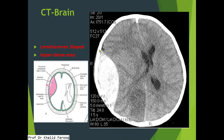This CT brain shows a biconvex or lens-like high density collection outside of the brain parenchyma, which is the typical picture for extradural hemorrhage. This is basically because of bleeding from the meningeal arteries. We can see there is midline shift and mass effect on the ipsilateral right lateral ventricle.